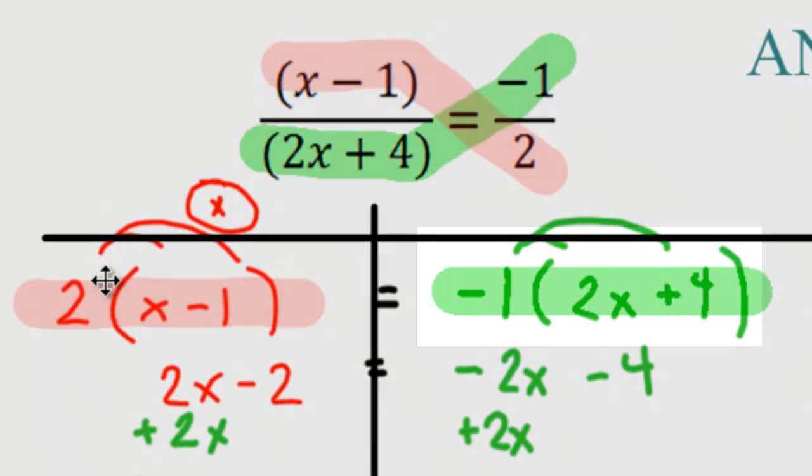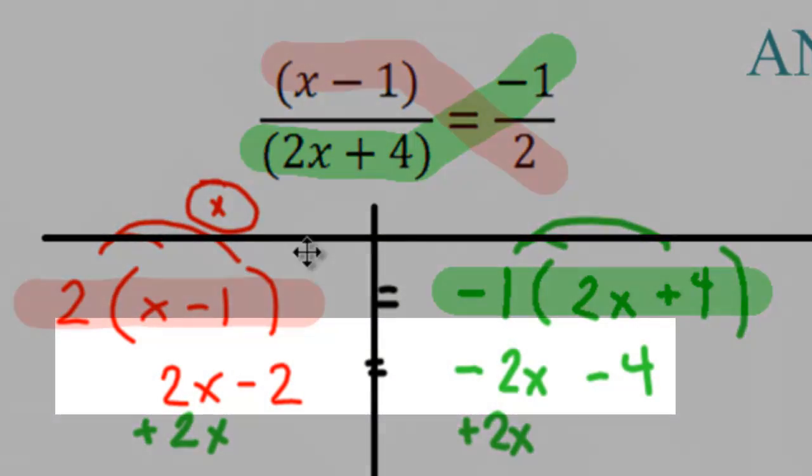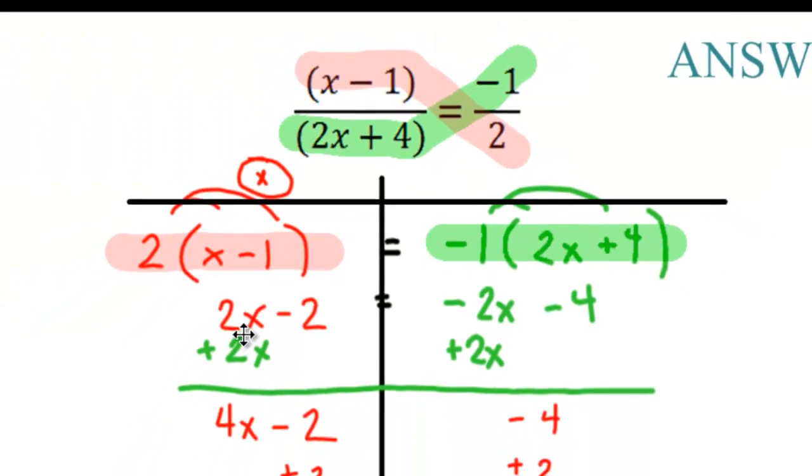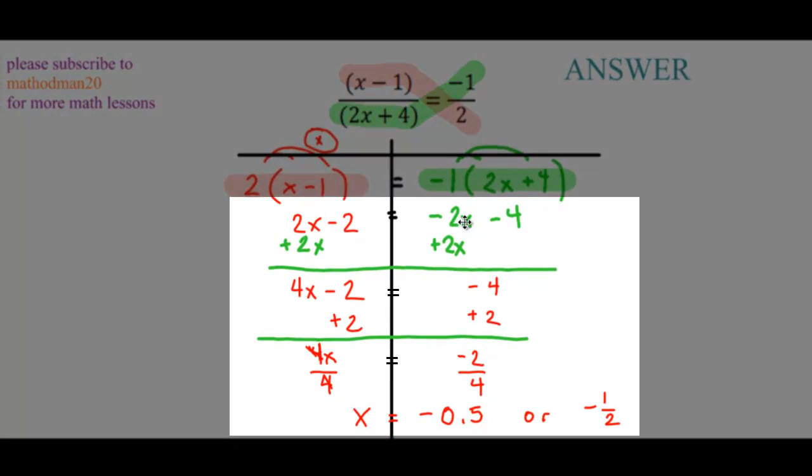Use the distributive property to make the problem easier for yourself. After you have distributed, it's just an equation with variables on both sides. Move all your x's on one side. I chose the left by adding 2x to both sides. 2x plus 2x, 4x. The negative 2 drops down. Negative 2x plus 2x cancels out.